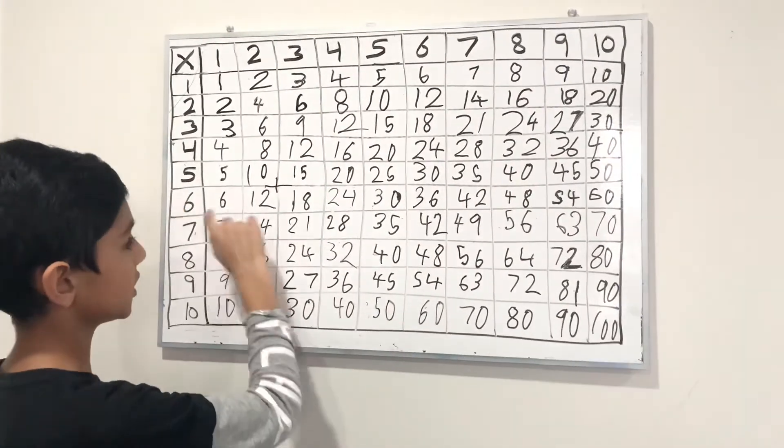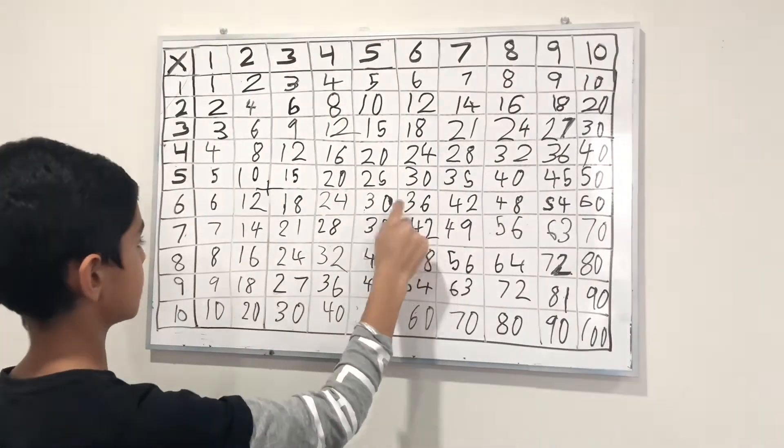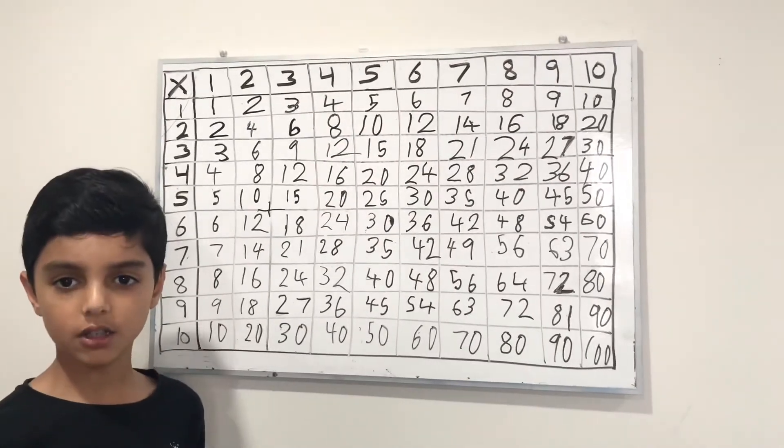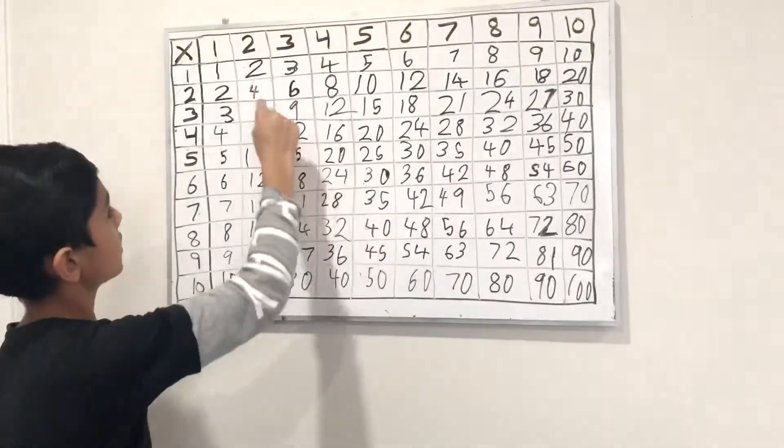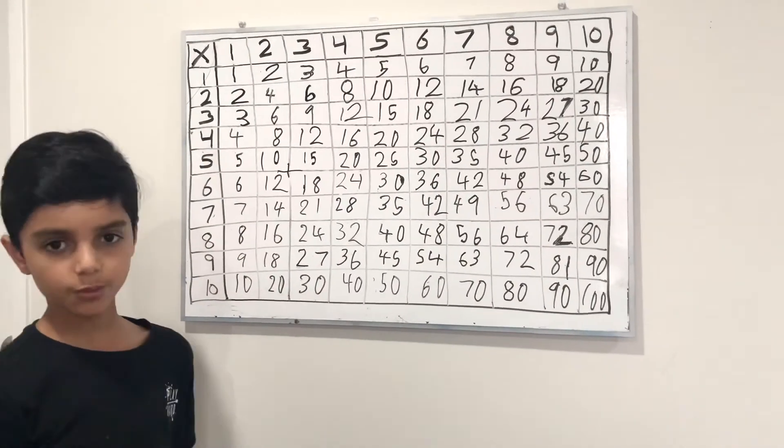If we see the sixth row and the sixth column, and we meet here, which is 6 times 6, that is 36, and that is the square of 6. And if you look diagonally, you can see all the squares.